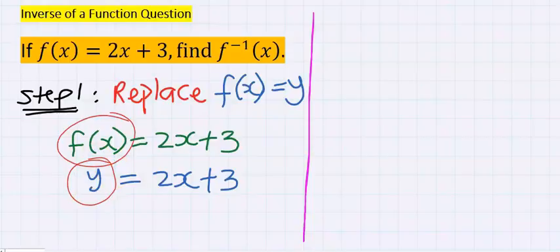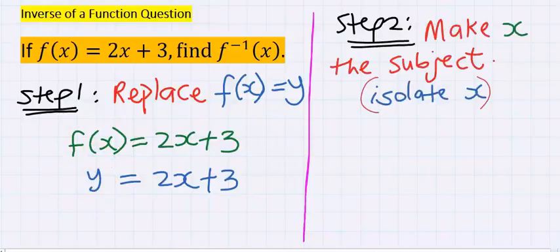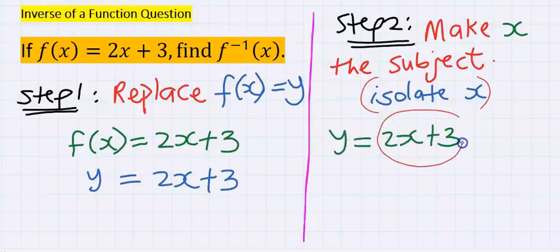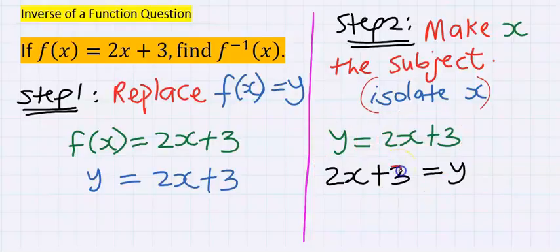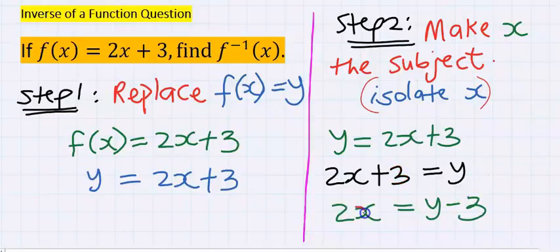Step number two: make x the subject—that is, isolate x. Next, I can decide to take everything here to the other side and take y over to the other side. As long as everything is moving, nothing changes sign. Next, I will take plus three across and it will become minus three.